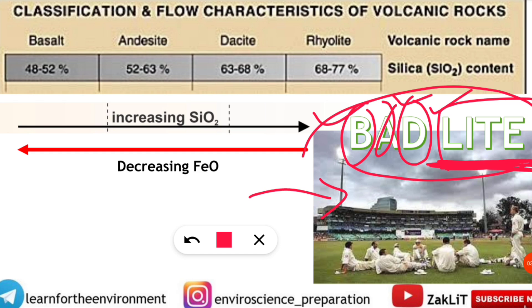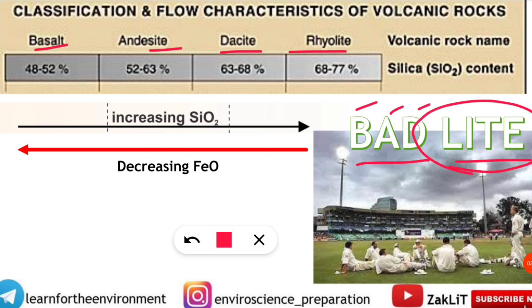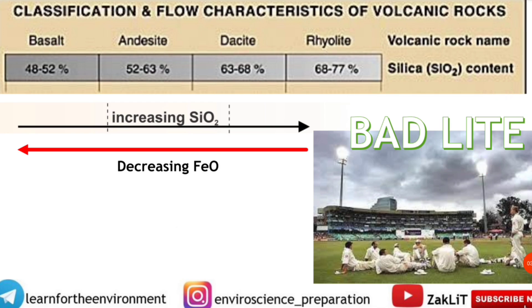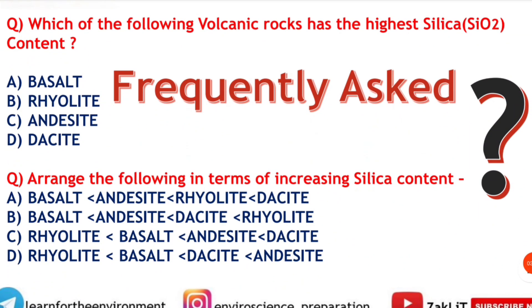And 'LITE' stands for rhyolite. So 'BAD LITE' will help us get good marks! Just remember: B for basalt, A for andesite, D for dacite — those are the abbreviations — and 'lite' is taken from rhyolite. If you just remember 'BAD LITE', you can answer this kind of question about increasing silica content in volcanic rocks.